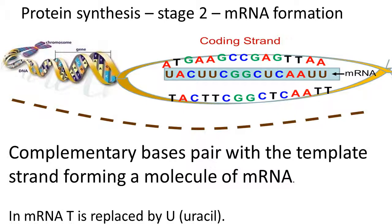So we've got this little molecule, this mRNA molecule, which is a piece of genetic information that's going to move out of the nucleus to a ribosome. And that's what's going to be read for protein synthesis. Okay, so complementary bases pair with the template strand forming a molecule of messenger RNA.